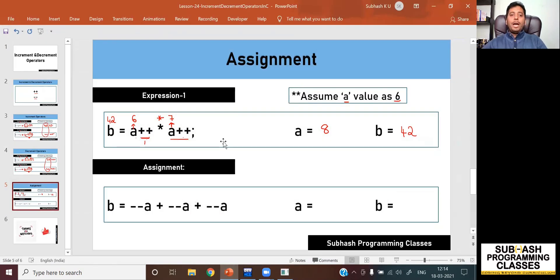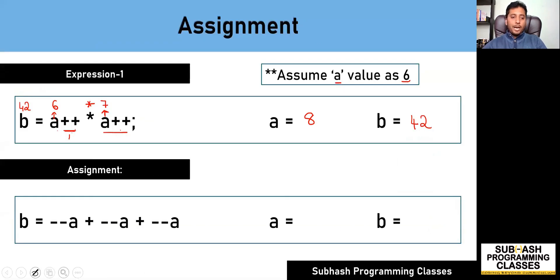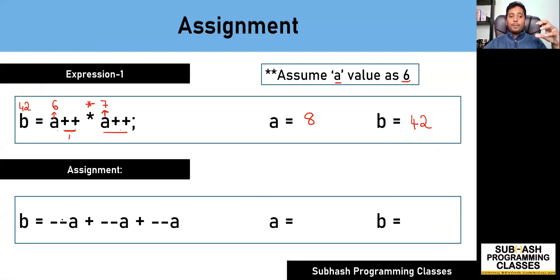Now I am going to give you an assignment. I want you to solve this expression and give me the value of a and b. Please pause this video right now — don't move ahead. Take a pen and paper and find out the answer for: b = --a + --a + --a. Understand the difference between pre decrement and post decrement and then solve this problem. Once you get the answer, please post it in the comment section below.